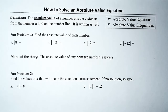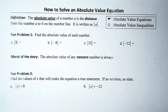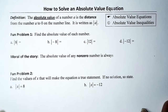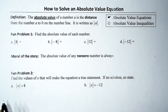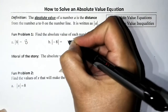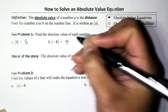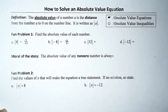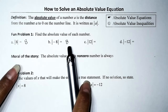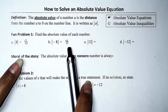Hi guys, today we are going to be solving absolute value equations, and in a later video we are going to be solving absolute value inequalities. So let's do this. Problem number one reads: find the absolute value of each number. Absolute value of 8 is 8, absolute value of negative 8 is 8. Like, from back in the day we were just taught: if you take the absolute value of a number, just make sure your answer is positive.